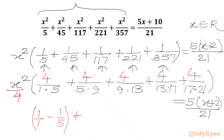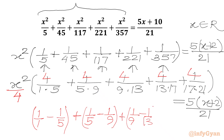Next, 4 over 5 times 9 we can write as 1 over 5 minus 1 over 9. Then 4 over 9 times 13 we write as 1 over 9 minus 1 over 13. Then 4 over 13 times 17 becomes 1 over 13 minus 1 over 17. And 4 over 17 times 21 we write as 1 over 17 minus 1 over 21.